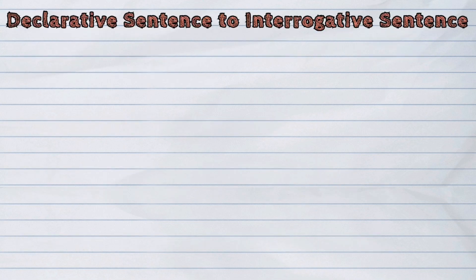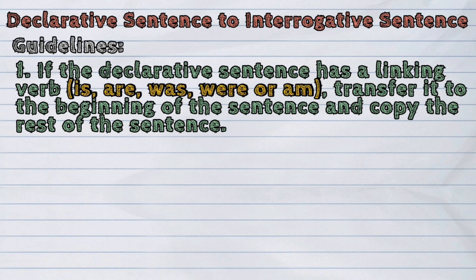A declarative sentence can be transformed into an interrogative sentence. Here are the guidelines. The first one is: if the declarative sentence has a linking verb — the linking verbs are is, are, was, were, and am — transfer it to the beginning of the sentence, and then copy the rest.